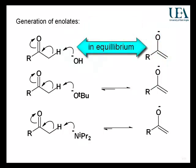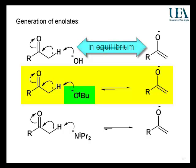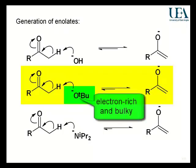It's at equilibrium, so there will be a balance of both structures at equilibrium. To influence that balance for a given ketone, the thing to change is the base. In the middle here, I've got another oxygen-centred anion. That oxygen atom is now substituted by a tertiary butyl group, and that tertiary butyl group is putting electron density into the oxygen through its sigma bonds — it's an inductive effect.